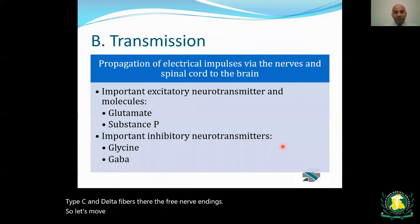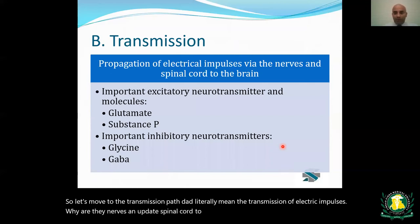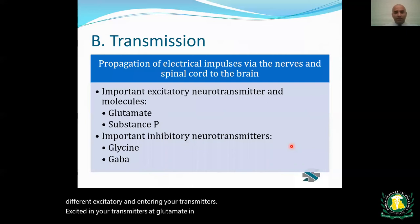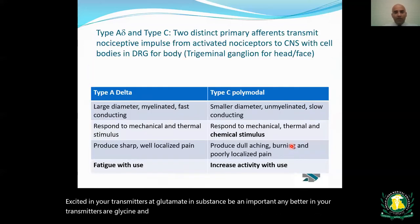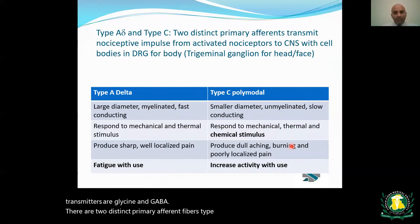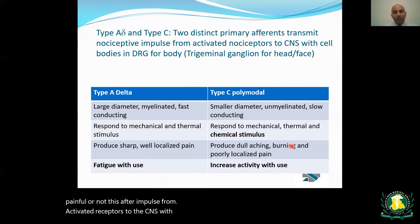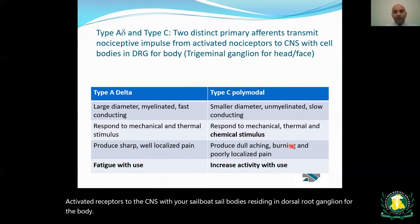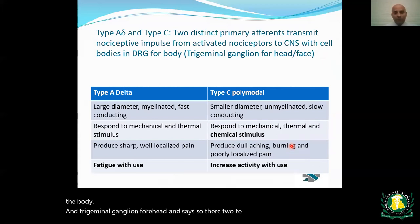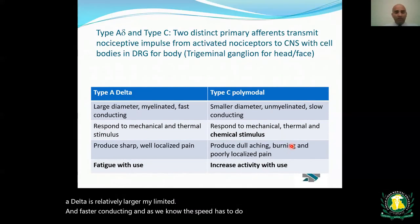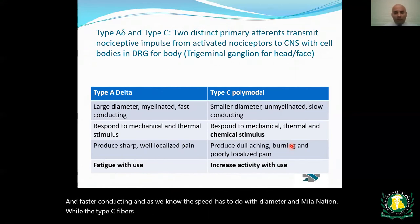Transmission literally means the transmission of electric impulses via the nerves and up the spinal cord to the brain. Impulses communicate across neurons using excitatory and inhibitory neurotransmitters. Excitatory neurotransmitters include glutamate and substance P; important inhibitory neurotransmitters are glycine and GABA. There are two primary afferent fibers: type A-delta and type C. A-delta is relatively larger, myelinated, and faster conducting, while type C is smaller, unmyelinated, and slow conducting.